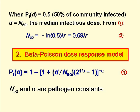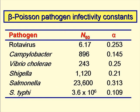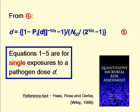The second dose-response model, which we use for bacterial and viral pathogens, is the beta-Poisson model, which is given by equation 4 on the slide. N50 and alpha are pathogen constants, and their values for some of the more common excreted pathogens are given in this table. We can rearrange equation 4 in terms of D, as shown on the slide, and this gives equation 5.